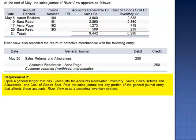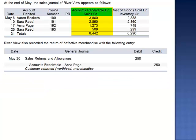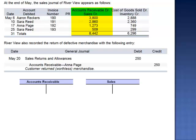Requirement 2 asks us to open a general ledger that has T accounts for accounts receivable, inventory, sales, sales returns and allowances, and cost of goods sold, and post the information from the sales journal and the general journal. The first column of the sales journal is a debit to accounts receivable and a credit to sales. The total debit to accounts receivable is $8,442, and we credit sales for the same amount.